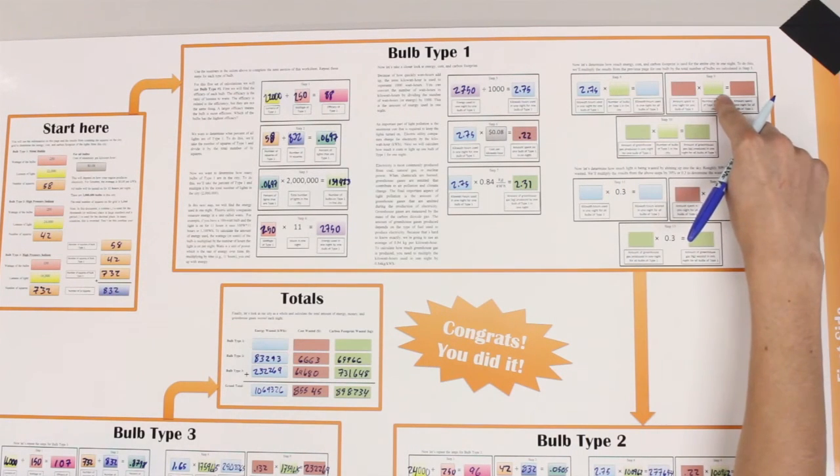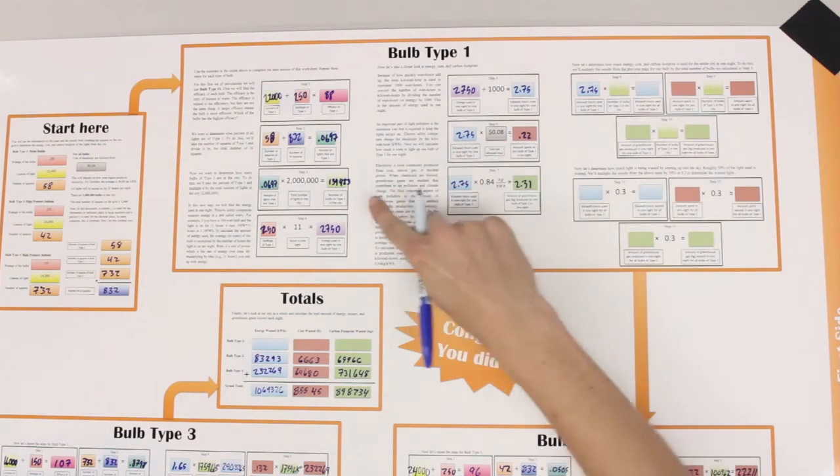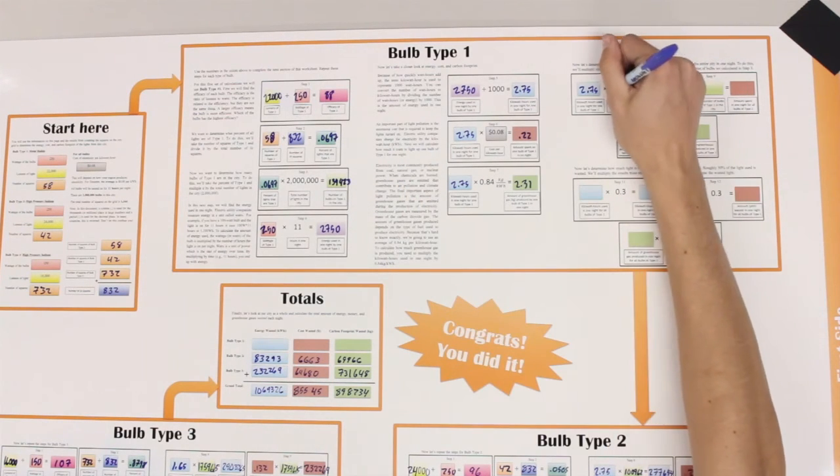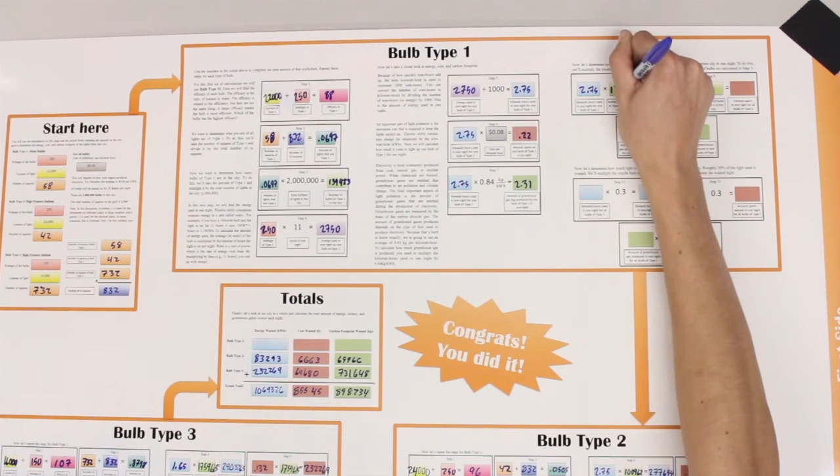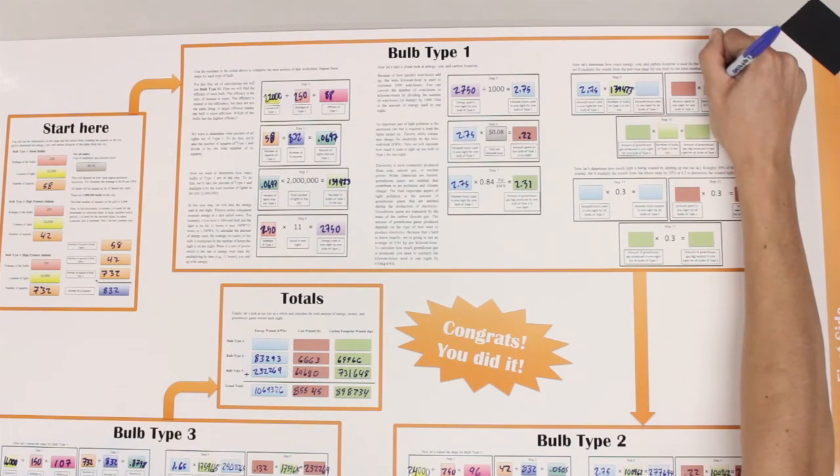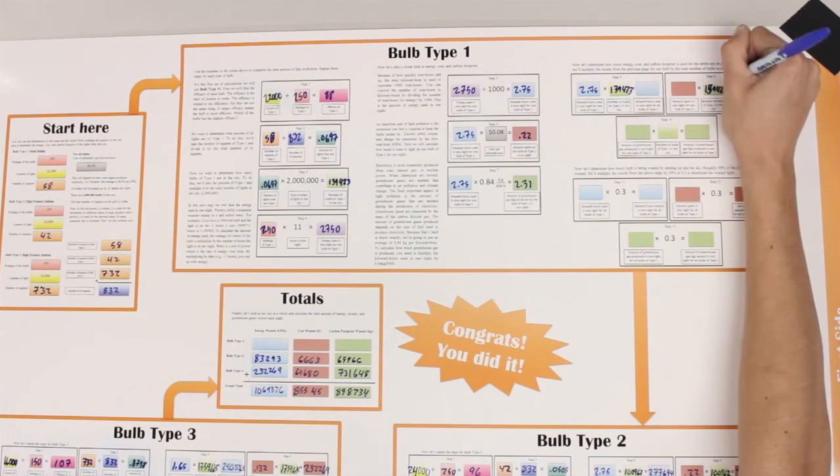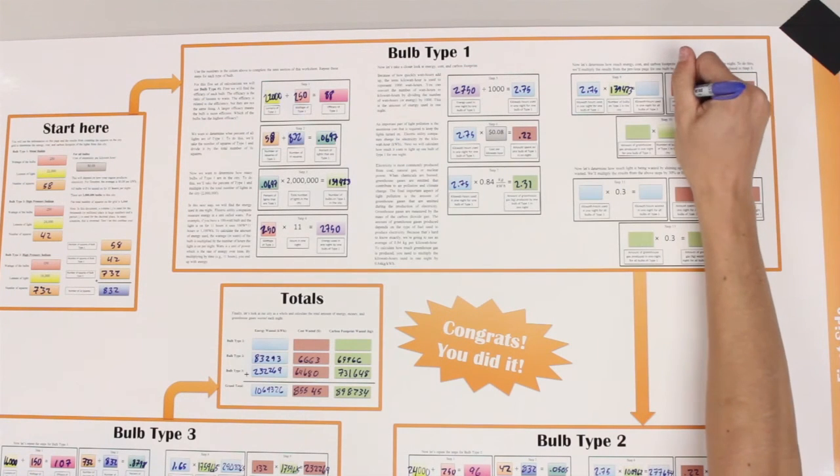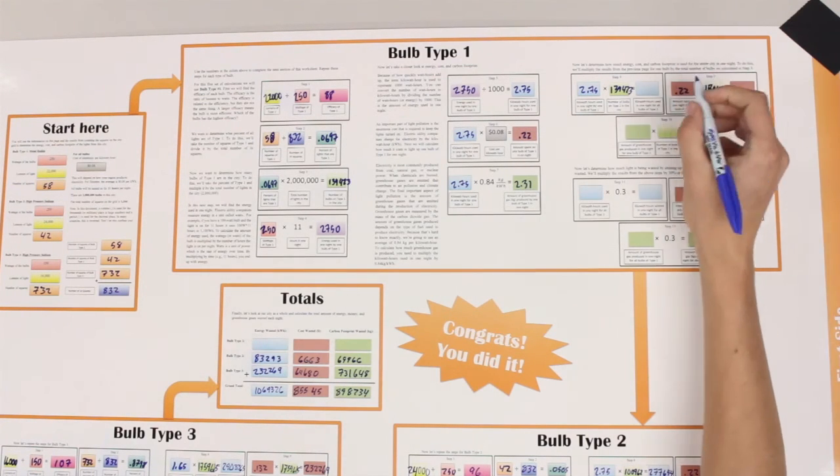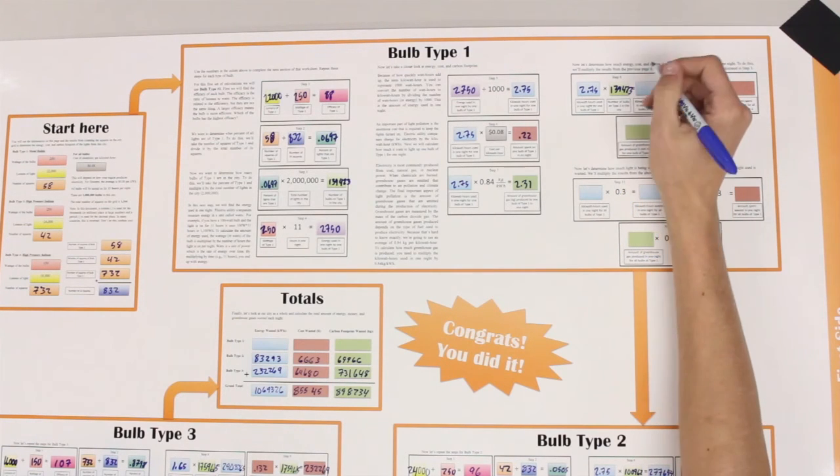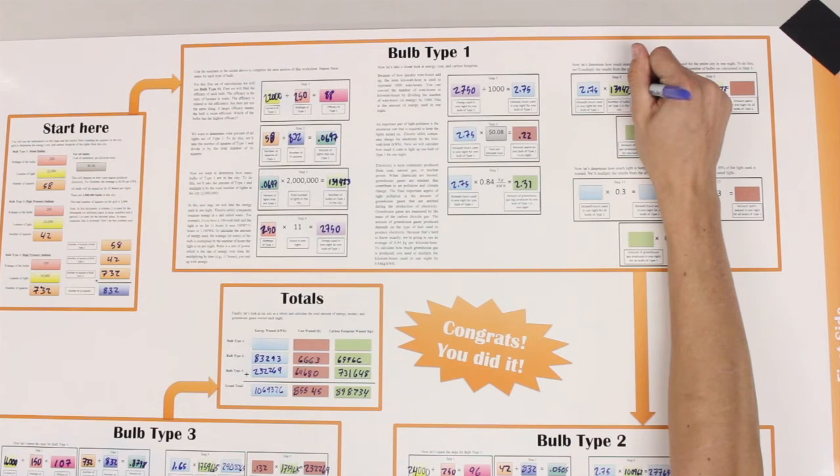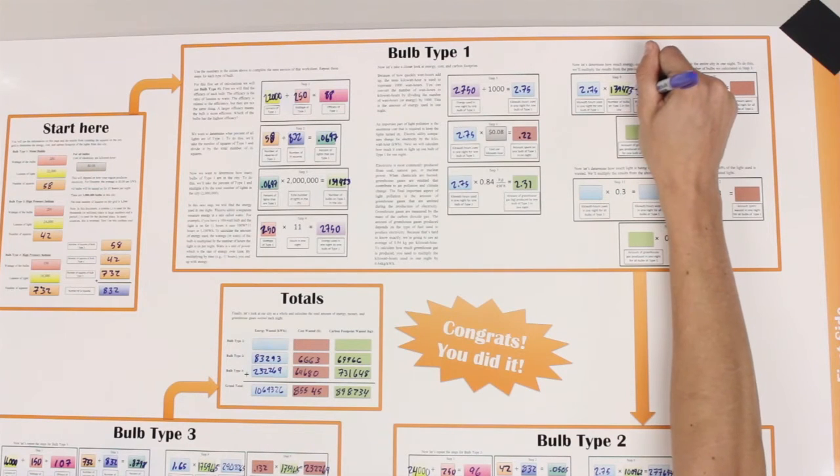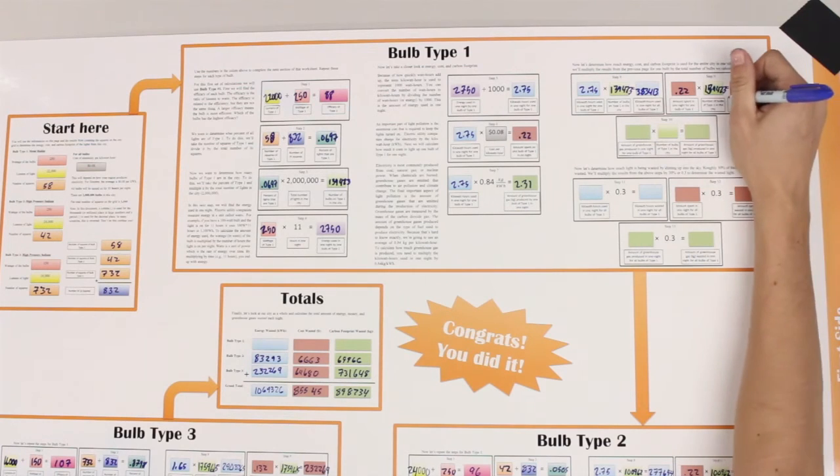Up here, plug in the total number of bulbs that you found from step 3. In this box, take the cost to run one bulb and plug it in. Now, multiplying this will give us the total number of watts used by all the bulbs of bulb type 1. This will give us the total cost to run those bulbs.